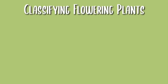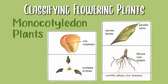Now we can move on to the classification of plants. We have monocot plants, and these plants have one cotyledon. Their petals are usually in multiples of three. Their leaves are narrow and they have parallel veins. They also have fibrous root systems. Examples of monocot plants are orchids, wheat, rice and bananas.